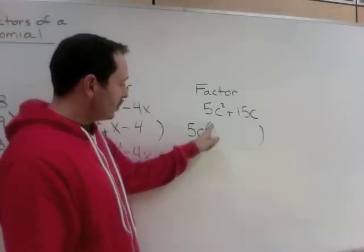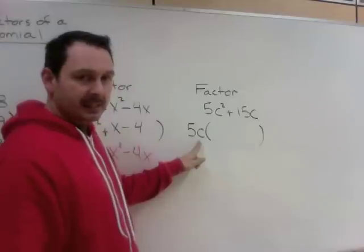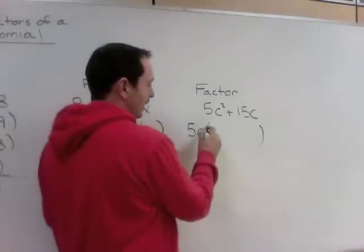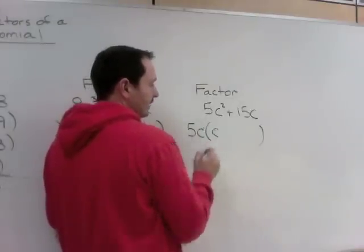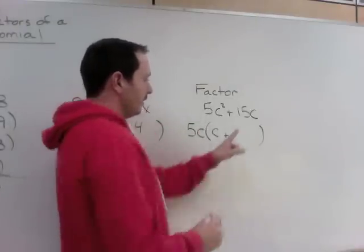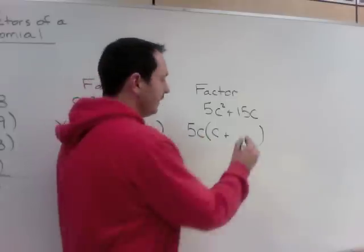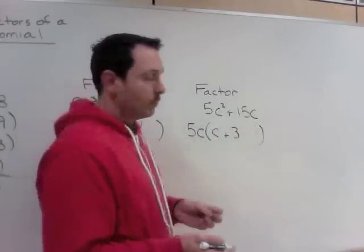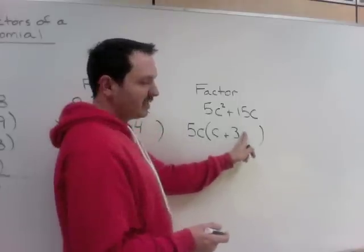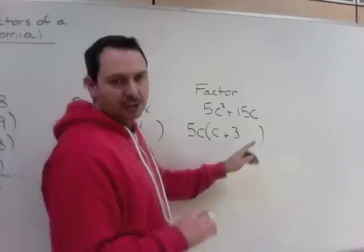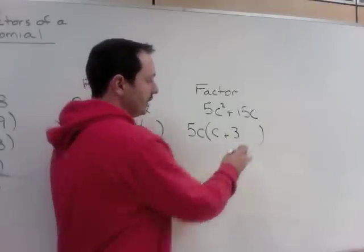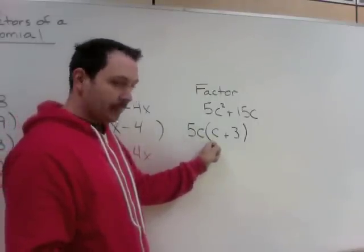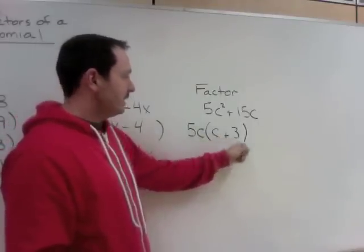5 divided by 5 is just 1. c squared divided by c. When we divide variables, we subtract them, so c squared and c1 is, there's a c left behind. 15 divided by 5 is 3. C divided by c, anything divided by itself is 1. So there's technically a 1 there, but 3 times 1 is just 3, so we're going to leave it. Our answer is, fully factored, 5c times, brackets are times, c plus 3.